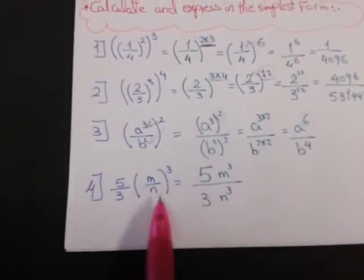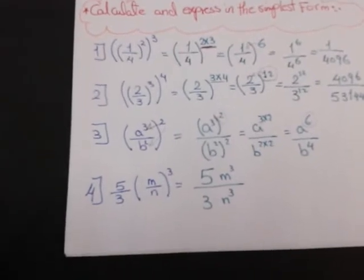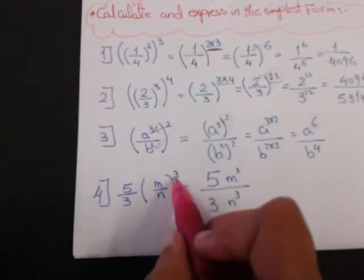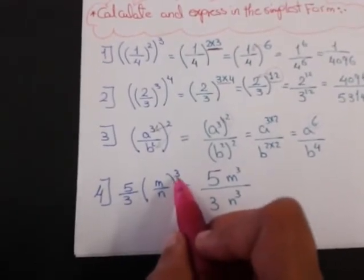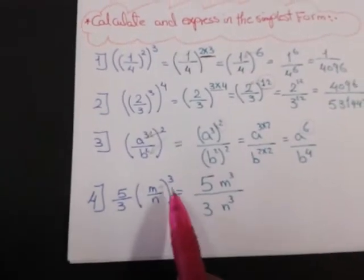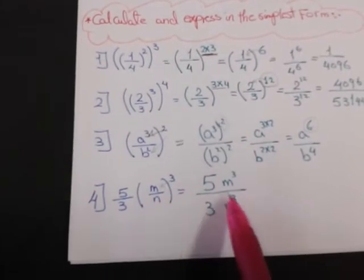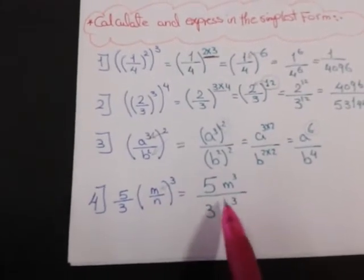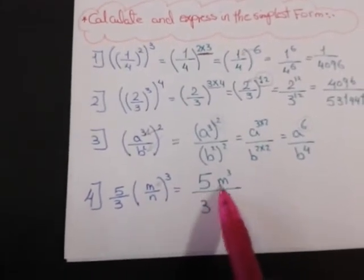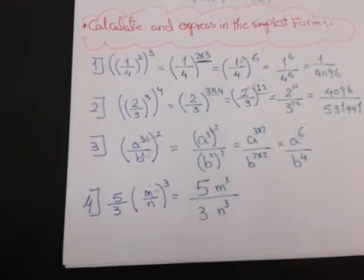Example 4: 5 over 3 times M over N, all to the power 3. It's very easy — I distribute the power 3 to the numerator and denominator: 5 power 3 and 3 power 3, and M power 3 and N power 3.